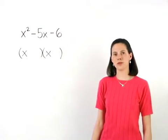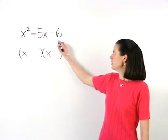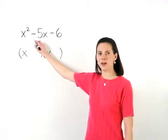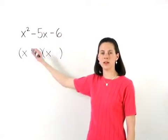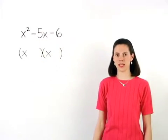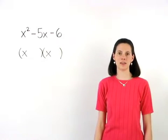Now we want to find factors of the constant term that add to the coefficient of the middle term. So we're looking for factors of negative 6 that add to negative 5.